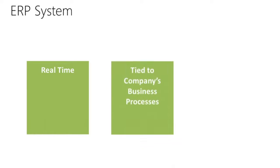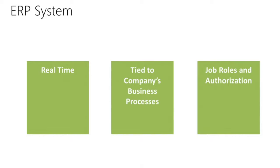Secondly, tied to the company's business process. An ERP system is more than only accounting software. ERP systems support distribution, service, and manufacturing. ERP also allows companies to implement industry-specific solutions and then tailor them to specific company processes. And thirdly, job roles and authorization. ERP systems include security and authentication systems, which is necessary because an ERP database can contain a mass of information. An advanced security system makes sure that data can only be accessed by authorized personnel.